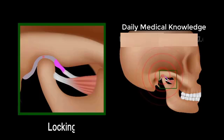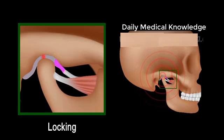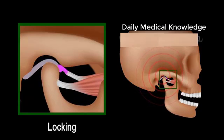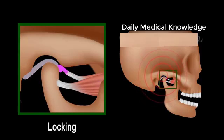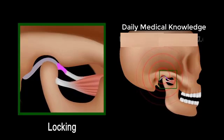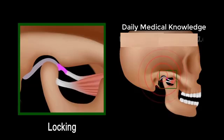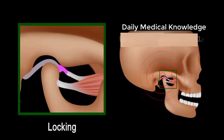This condition is called disc displacement with reduction. In later stages of disc dislocation, the condyle stays behind the disc all the time, unable to get back onto the disc. The clicking sound disappears but mouth opening is limited. This is usually the most symptomatic stage. The jaw is said to be locked as it is unable to open wide. At this stage, the condition is called disc displacement without reduction.